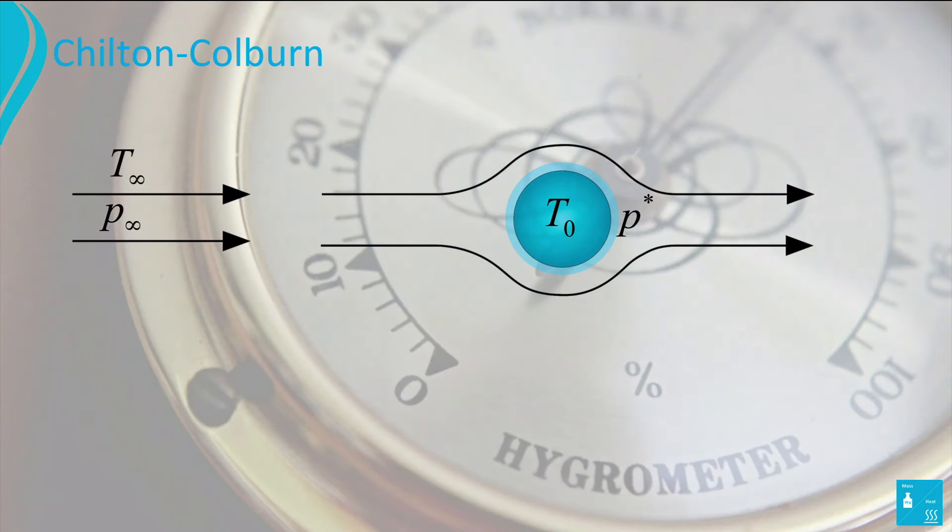We already know the correlations for the heat transfer coefficient h and the mass transfer coefficient k for flow around a sphere. Substituting these correlations, we obtain the following relationship between h/k.